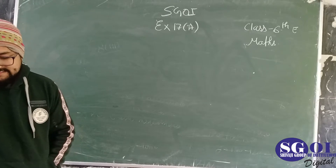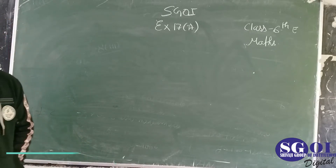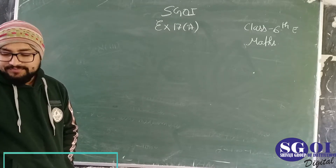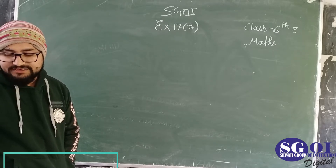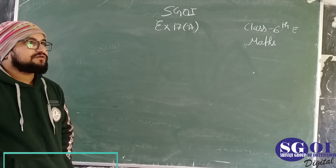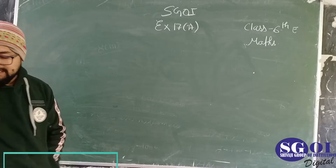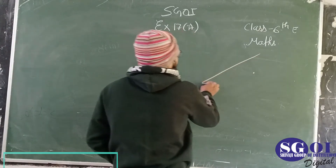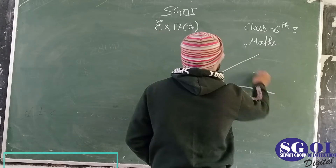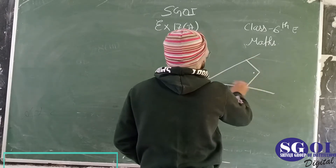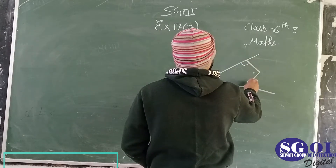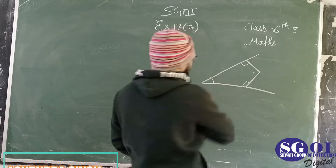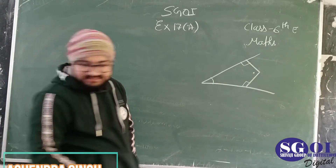Today I will be telling you question number 16. Question number 16 is a simple diagram. It is saying that in the adjoining figure, P is the point in the interior of angle K.O.B. I will be drawing the adjoining figure K.O.B. They are saying this angle is 90 degrees and this angle is 90 degrees as well. Now they are saying that this angle is given, that is 40 degrees.